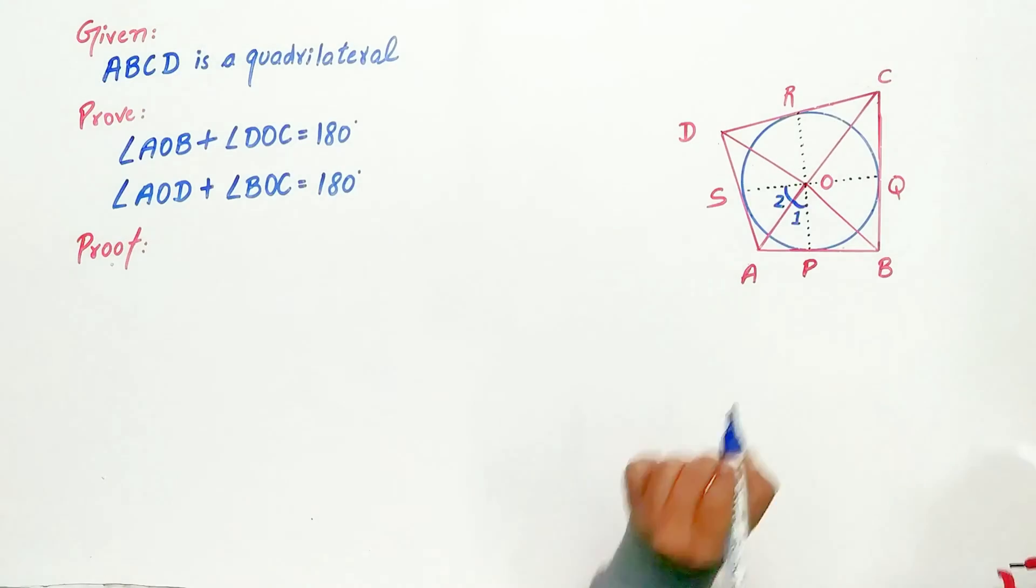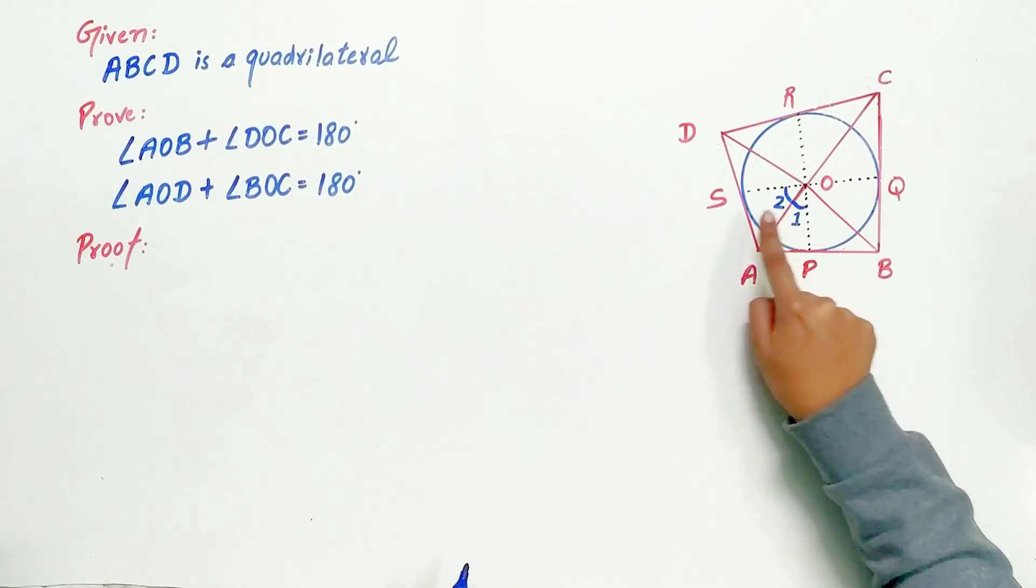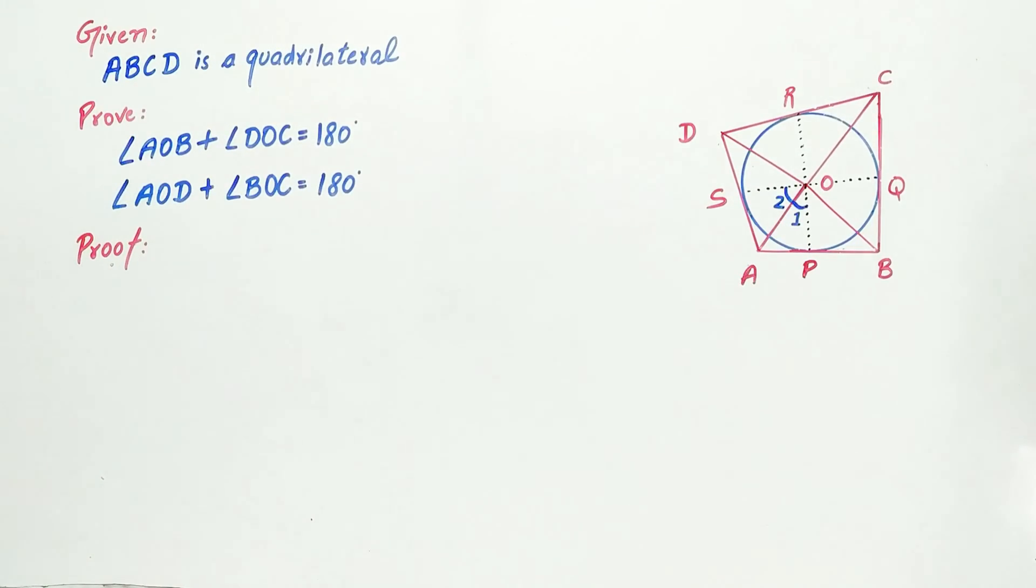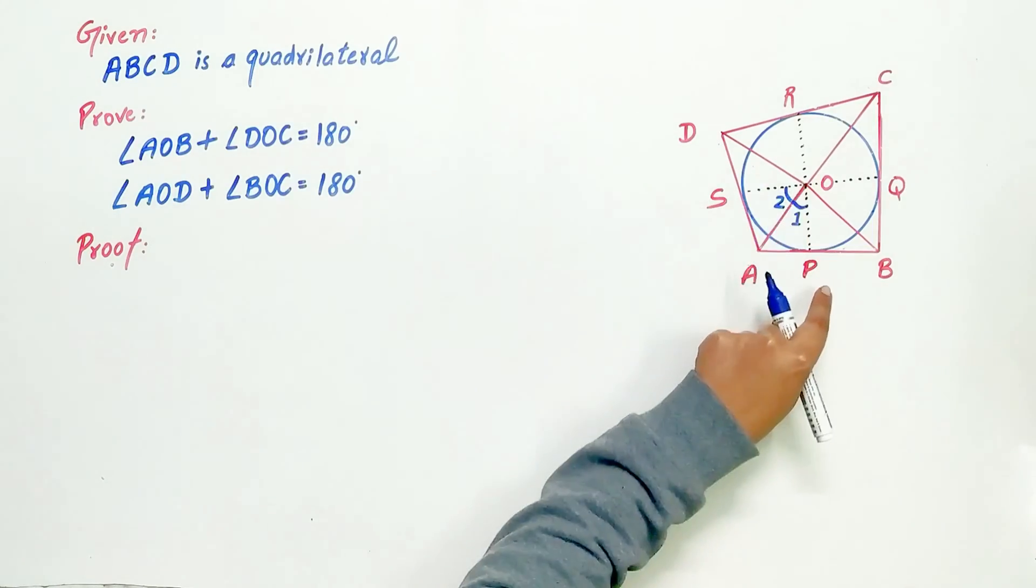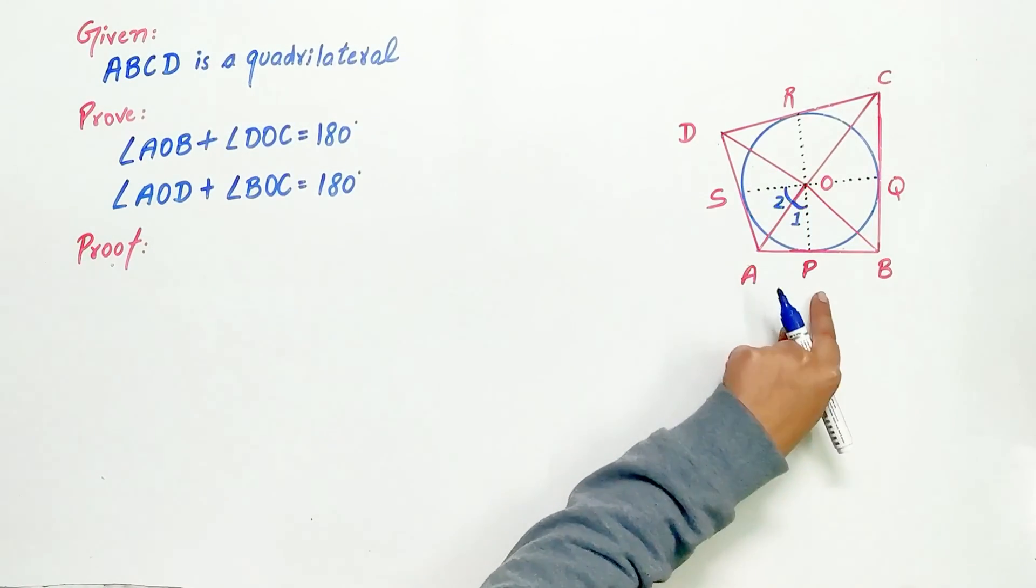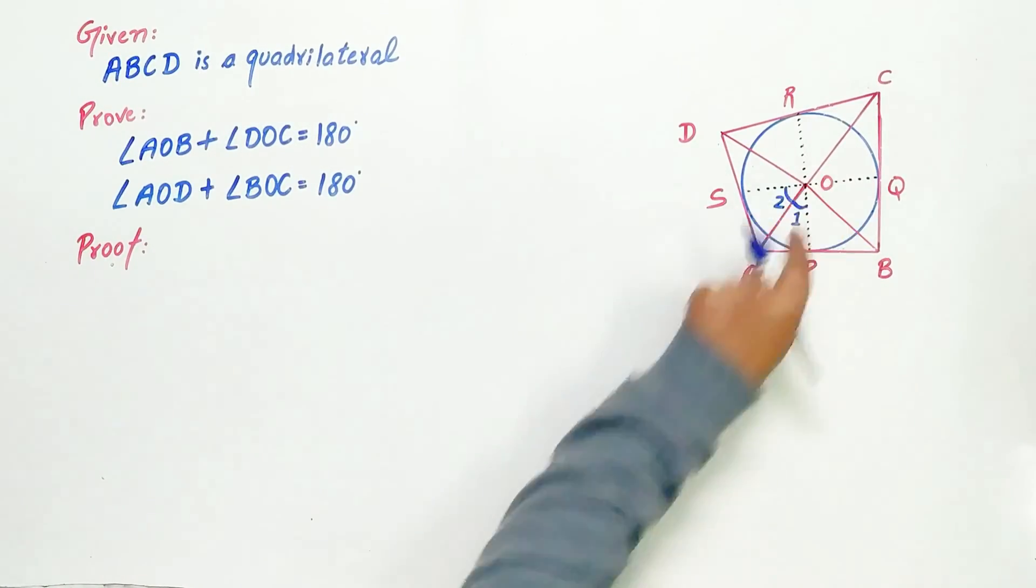So let's do it. Let us mark this angle as 1, another as 2. Now look carefully. There are two triangles: OAP and triangle OAS.